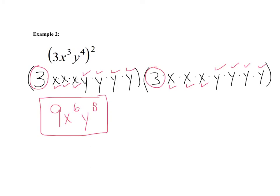If you look for the patterns, we've got this outer exponent of 2. We're distributing it to the 3, so really we're saying 3 squared — or 3 times 3 — which gives us 9. Then for x, the exponent was 3 and we're raising that to the second power, so 3 times 2 gives us x to the sixth. Same thing for y — it was already to the fourth, and raising it to the second power means 4 times 2 gives us y to the eighth.